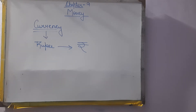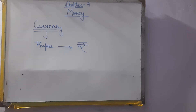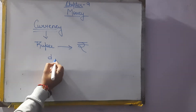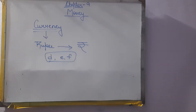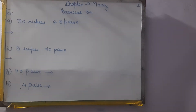Come to exercise number 34, question number 1: Write the following amount in words. There are 8 questions in which we are going to do question number D, E and F. First one is given: 30 rupees 65 paise.